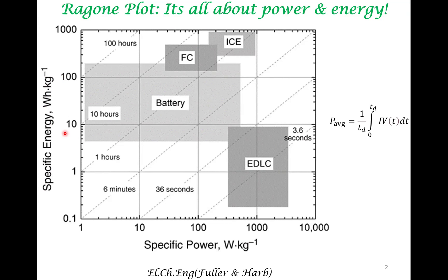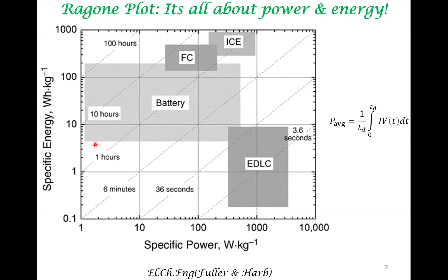What are the general observations? If you look at high power devices within electrochemical devices, these are typically electrochemical double layer capacitors. They have high specific power but low specific energy. On the other end, batteries have relatively high specific energy; however, they have relatively low specific power in comparison to the capacitors.